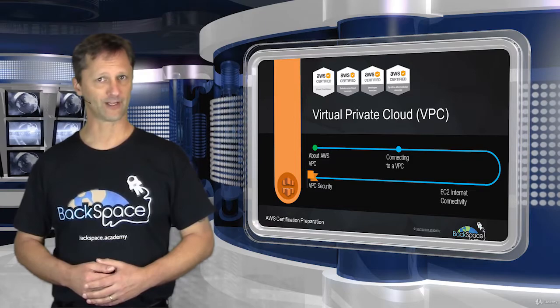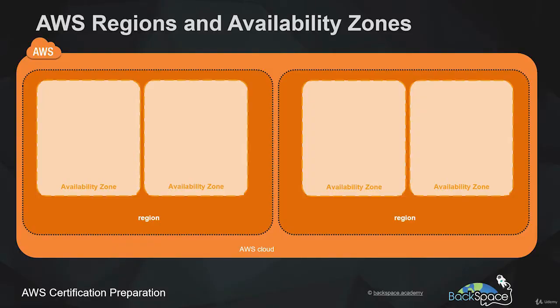Here we have a diagram of the AWS cloud. As we know, the AWS cloud is divided up into multiple regions across the globe, and each region is divided up into availability zones. Those availability zones are physically isolated from each other, which enables us to distribute our architecture across multiple availability zones, achieving high availability — if one availability zone goes down, the other will continue to operate.